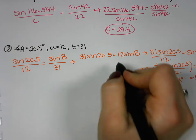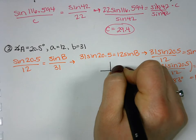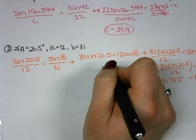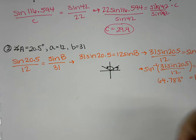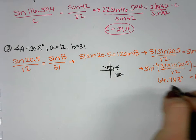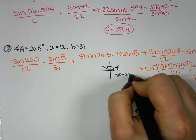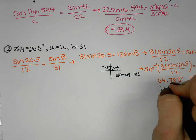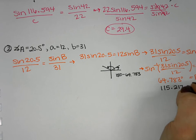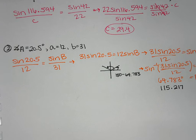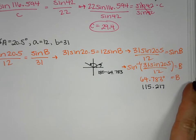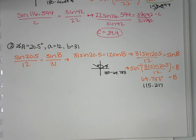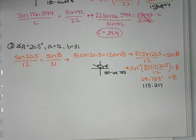That's the acute angle from quadrant one. What about the positive angle in quadrant two — the obtuse version? We do 180 minus 64.783 and get 115.217 degrees as a second possible angle B. So here we have two possible answers that could work for angle B: 64.783° and 115.217°. To determine whether both produce valid triangles, we need to find the third angle C for each case.